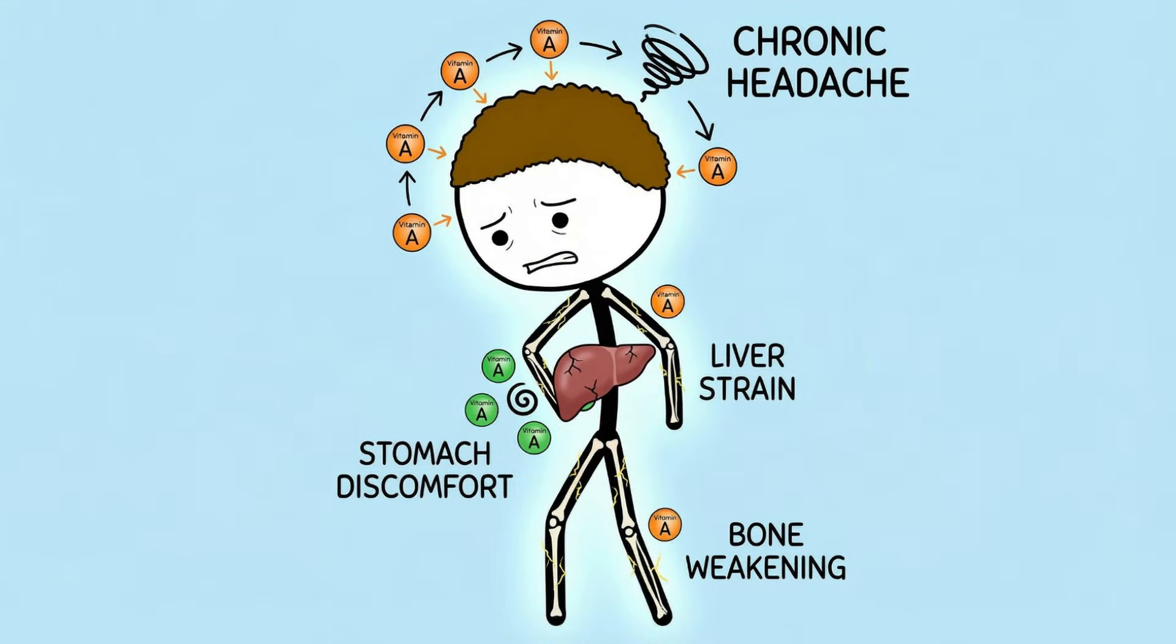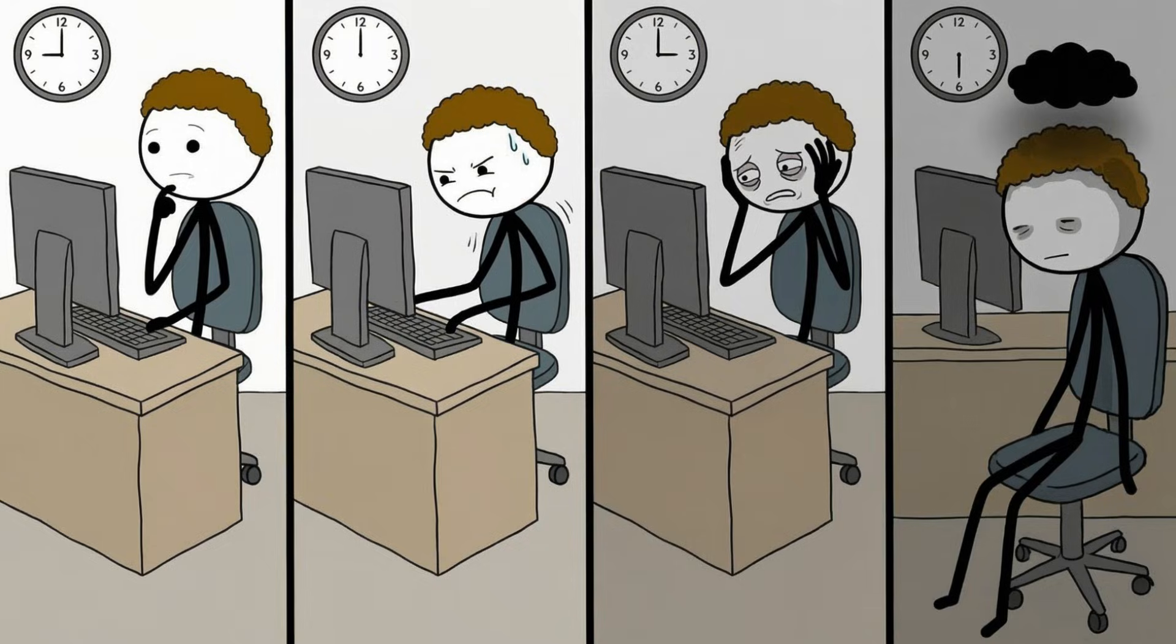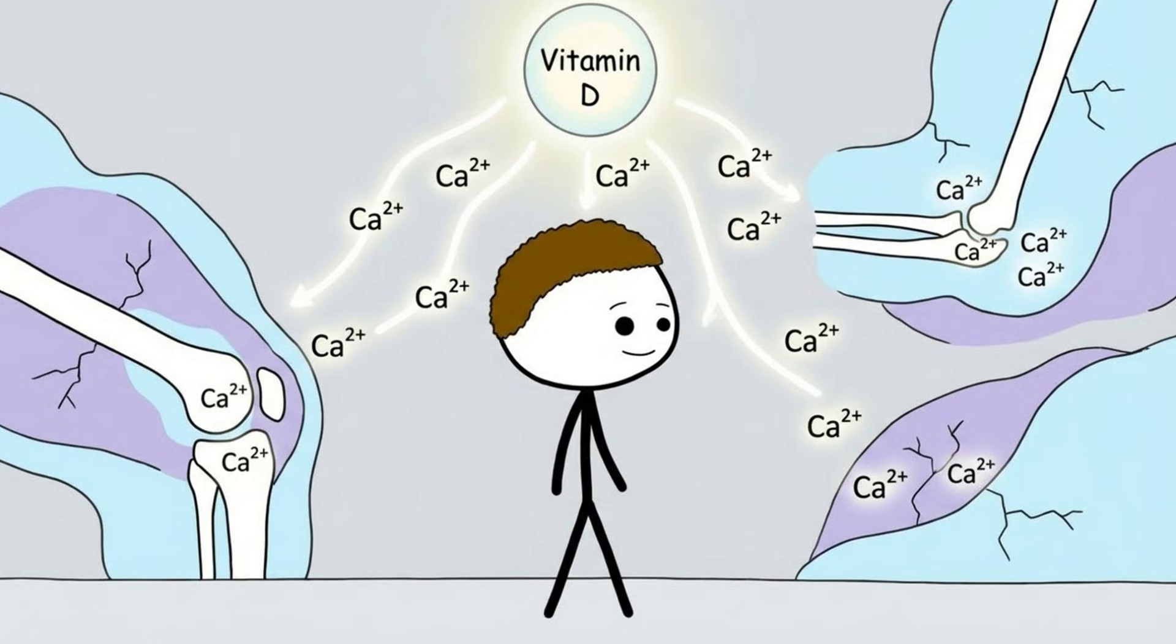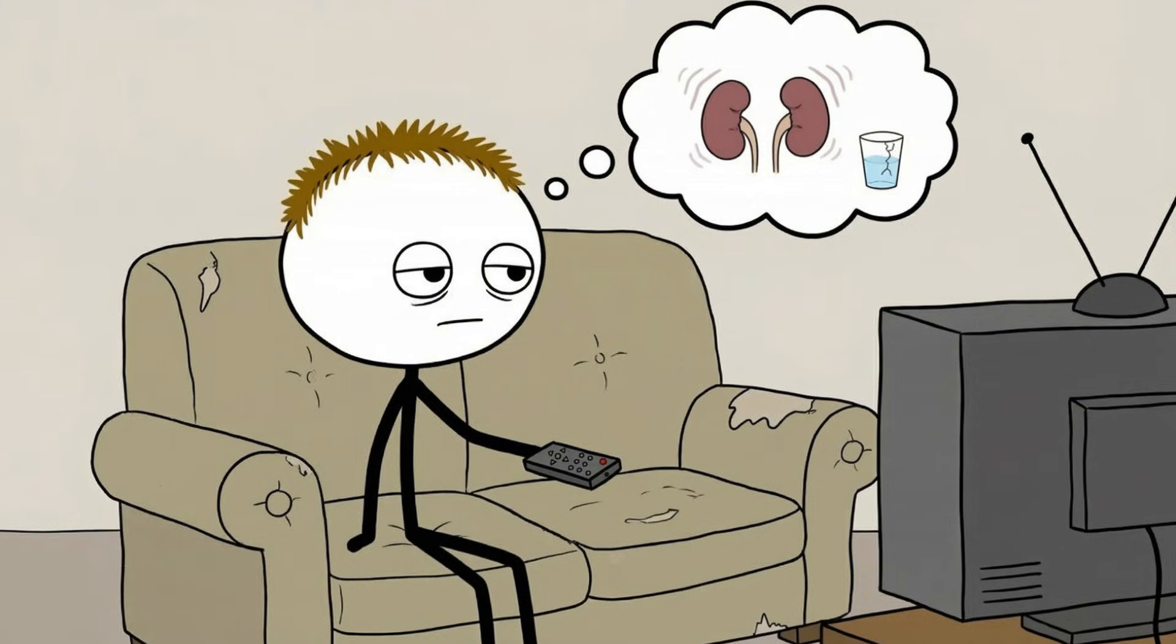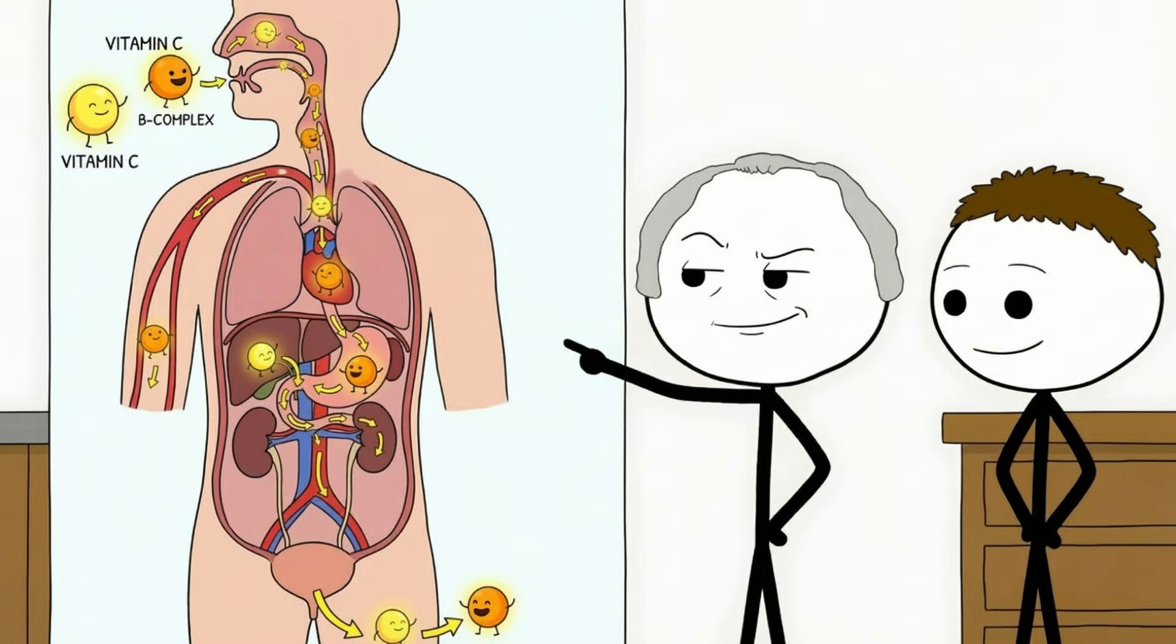Fat-soluble vitamins are the usual suspects. Vitamin A toxicity has been documented for decades, causing headaches, nausea, liver damage, bone thinning, and in severe cases, increased intracranial pressure. Vitamin D toxicity raises blood calcium levels, which can calcify soft tissues and quietly damage kidneys. No fireworks, just long-term consequences.